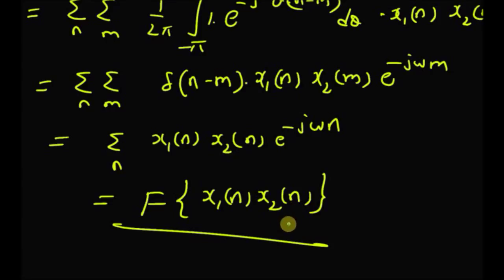To summarize: convolution in the discrete-time domain is equivalent to multiplication in the frequency domain, and periodic convolution in the frequency domain is equivalent to multiplication in the time domain. Thanks for watching.